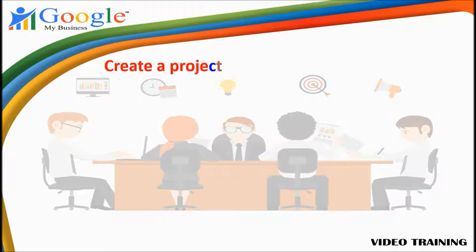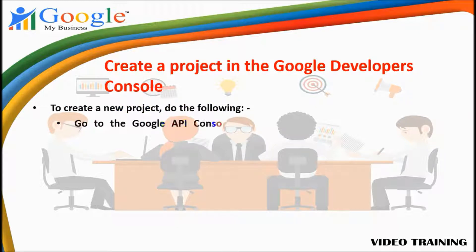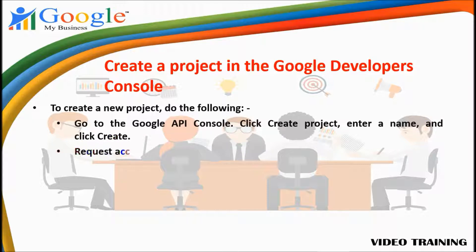Create a project in the Google Developers Console. To create a new project, do the following: go to the Google API Console, click 'Create Project', enter a name, and click 'Create'. Then request access to the API.